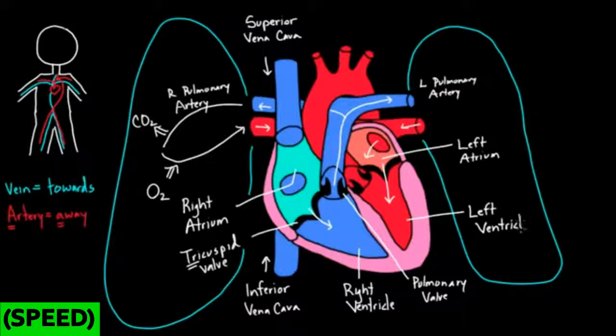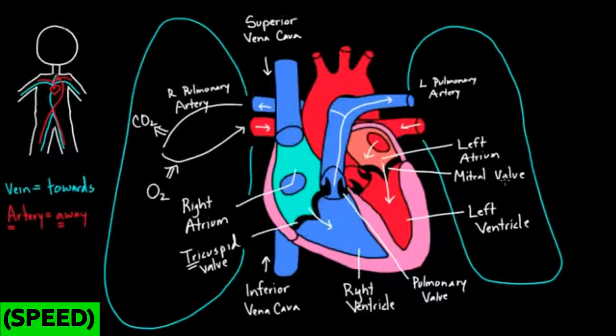Just like before, where it went from the right atrium to the right ventricle, now we're going from the left atrium to the left ventricle. It passes through a valve here. This valve is called the mitral valve. Its job is to make sure that blood does not go from the left ventricle back to the left atrium by accident. It wants to make sure that there's forward flow.